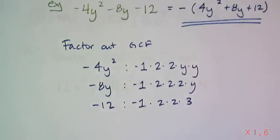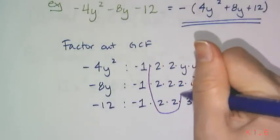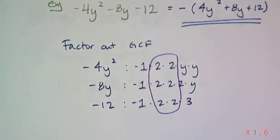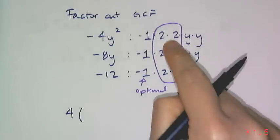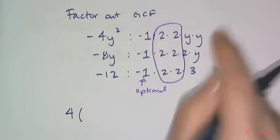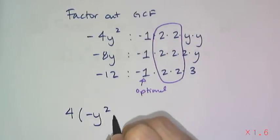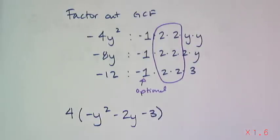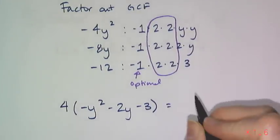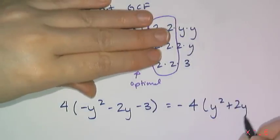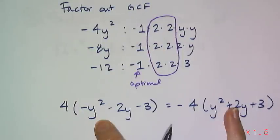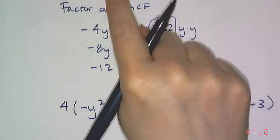And so the GCF in this case is 4. And if you want to include the negatives, you can. This part right here is optional, as you will soon see. And so if I want to factor out the GCF, I can say the 4 is out there. And if I think the GCF is 4, then these negative signs are still included. So what I have is negative y² - 2y - 3, and if I think about the GCF as being the negative 4, then what I have left is y² + 2y + 3.